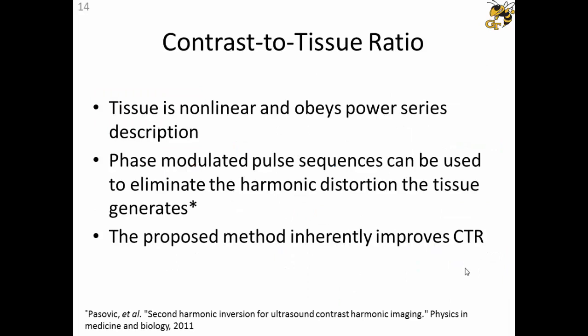As an additional note, it has been shown that the tissue analysis related to propagation in the tissue obeys power series also. The contrast-to-tissue ratio is an important metric to describe where the signal is coming from. Is it from the microbubble or is it coming from the tissue? Since they obey the power series, similar phase-modulated pulse sequences can be used to improve the contrast-to-tissue ratio. The proposed method inherently improves the contrast-to-tissue ratio.